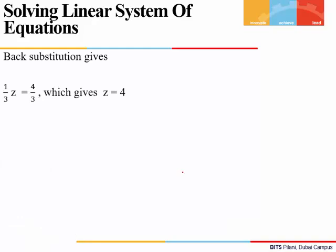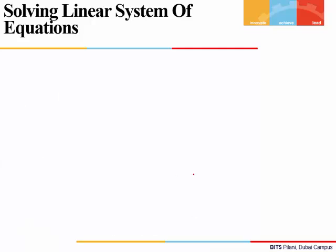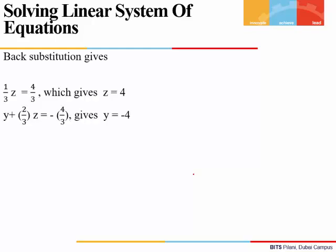Now we do back substitution. The first column is associated with variable x, the second with y, and the third with z. From the last row: (1/3)z equals 4/3, giving z equals 4. Substituting into the second equation: y plus (2/3)z equals minus 4/3, which gives y equals minus 4. Substituting into the first equation: x plus 2y plus 3z equals 1, giving x equals minus 3. So the solution is (minus 3, minus 4, 4).